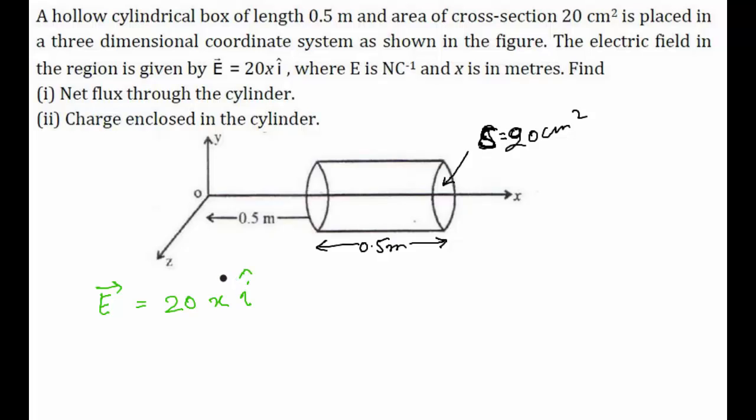Let's say that E₁ is the electric field at the left circular face. This left circular face is at a distance of 0.5 meter from the origin, so E₁ = 20 × 0.5 î = 10 î.